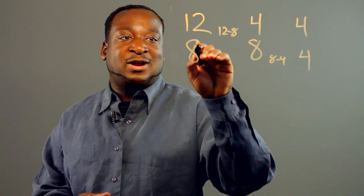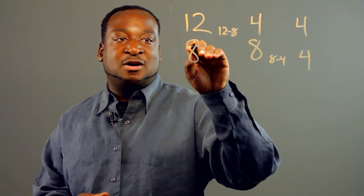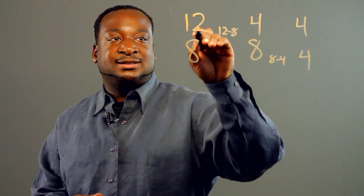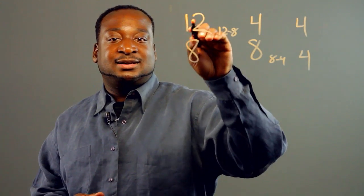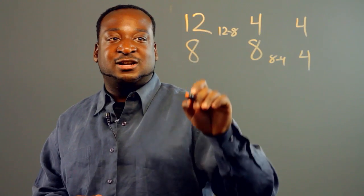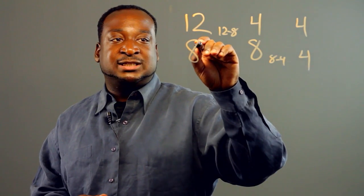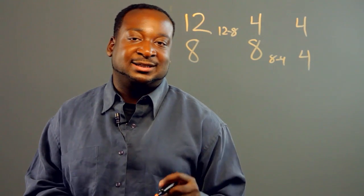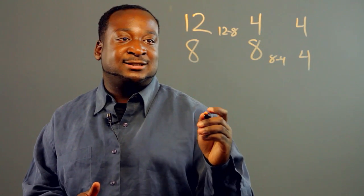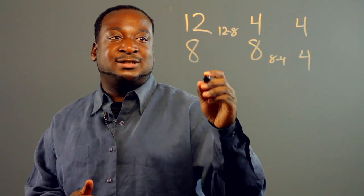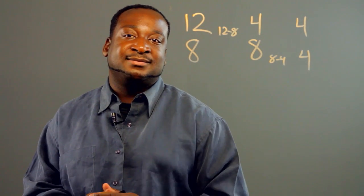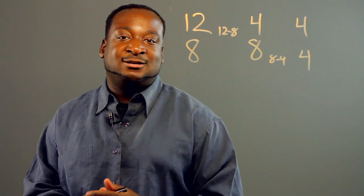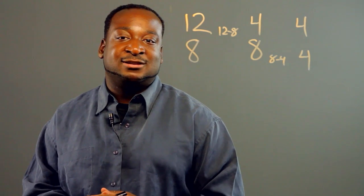And once it subtracts into the smaller number evenly, we're left with the difference — which is the larger number, the distance from 8 to 12 in this case. We know that it has to go into that difference evenly. So this is why the Euclidean algorithm works.